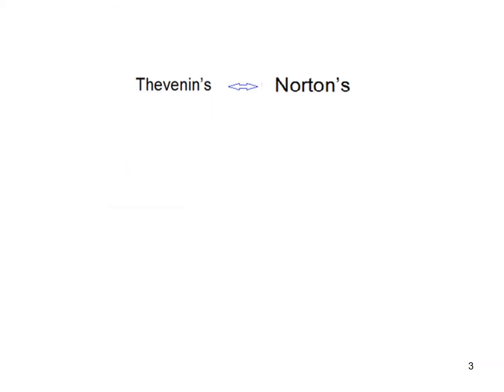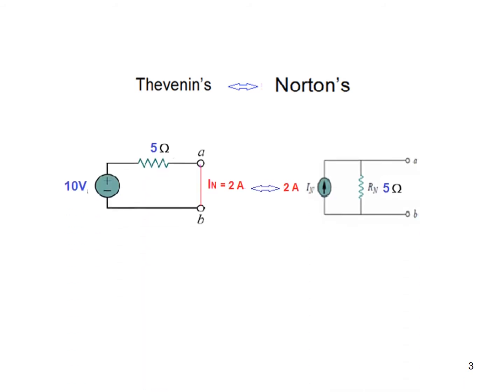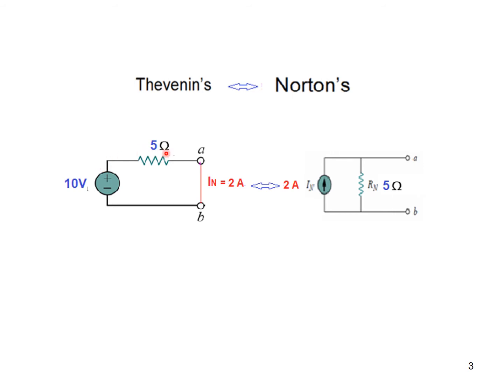Thevenin's and Norton's theorems are kind of interchangeable — if you know Thevenin's theorem you can find Norton's, or if you know Norton's you can calculate Thevenin's. As a short example: if this is the Thevenin circuit with 10 volt and 5 ohm resistance, shorting the terminal gives a current of 2 ampere (10 divided by 5). So Norton current is 2 ampere with Norton resistance equal to the Thevenin resistance. Similarly, multiplying 2 by 5 gives 10 volt, which is the Thevenin voltage.